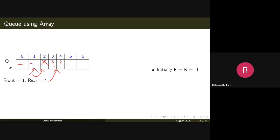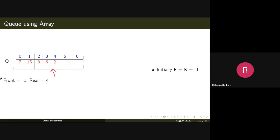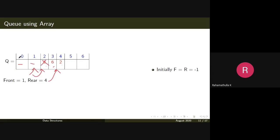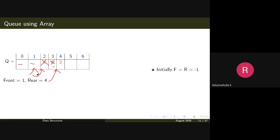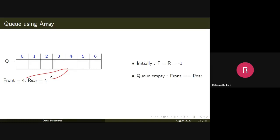If front was pointing to minus one it means you have elements starting from index zero. If front points to one, you have elements starting from index two. If front points to two, you have rear minus front elements. Now if you delete all elements, front will be pointing to four and rear is also pointing to four — front equals rear means zero elements in the queue.